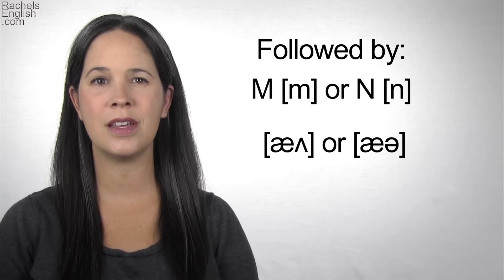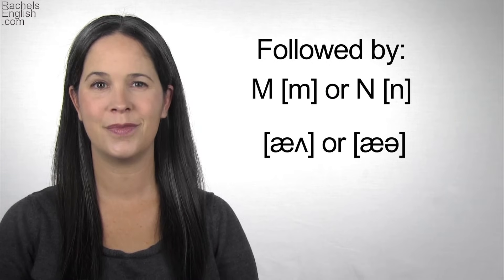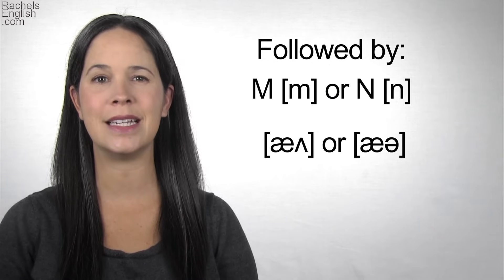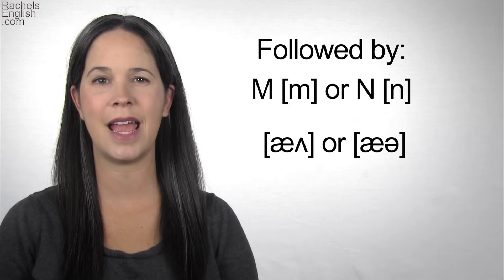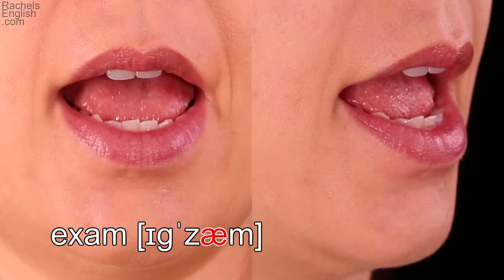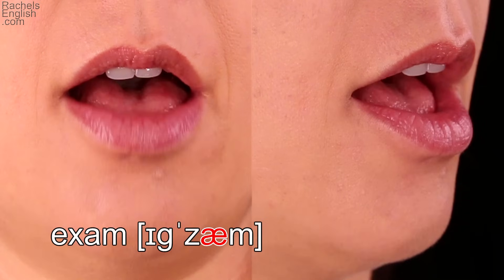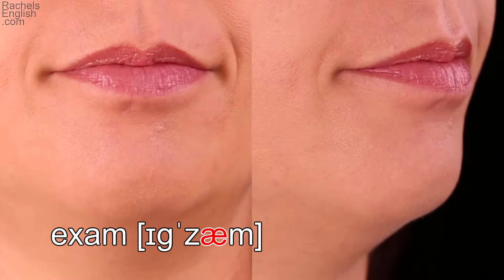You can think of this UH relaxation as the UH as in butter sound or schwa sound. Let's look up close and in slow motion at the word exam. First we see the familiar shape of the mouth when the AA is in a stressed syllable. Watch how the relaxation happens. The corners of the lips relax in, the tongue will relax down in the back, and the lips close for the M consonant.